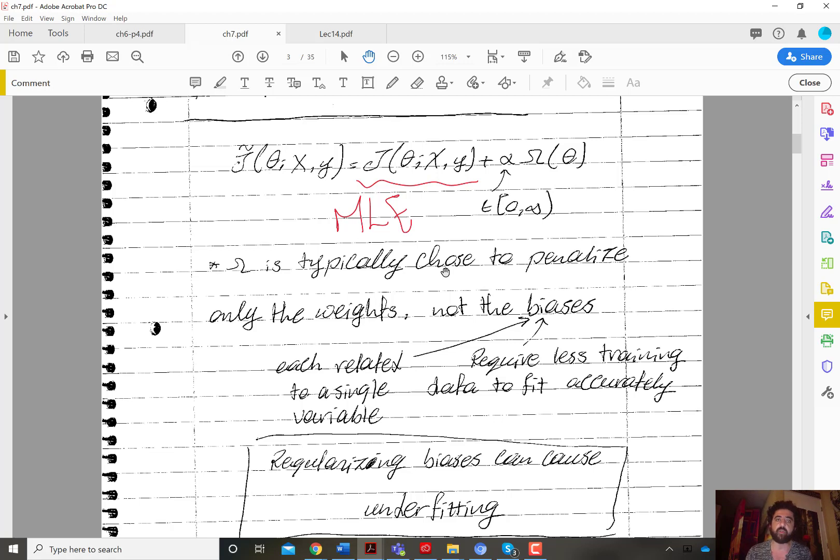For example, you have the L2 norm, the sum of the squares of the weights, L1 norm, the sum of the absolute value of the weights, and L0 norm is a norm that penalizes by the number of non-zero weights.